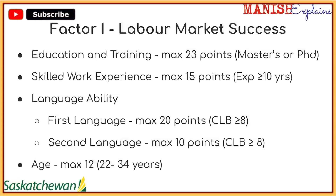The last component of Factor 1 is age. Obviously this is not something you can control. The maximum points you can score for age is 12, which applies to the age bracket of 22 to 34 years. Beyond that, your points start going down: 35 to 45 gets 10 points, 46 to 50 gets 8 points, and more than 50 gets zero points. All these Factor 1 components combined can come up to a maximum of 80 points.